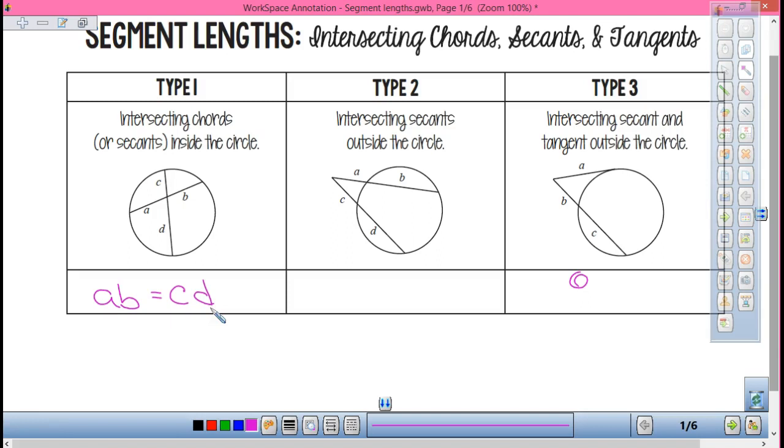On the outside, this changes things a little bit. A is on the outside of my circle, so I'm going A times A plus B. So whatever is outside - you're going outside times outside plus inside equals what's my outside over here, C times outside plus inside, C plus D.